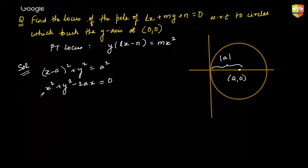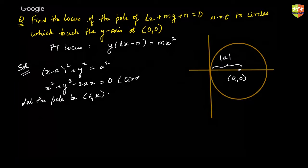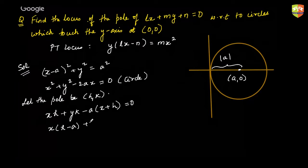Now, to find the locus of the pole, I will call it (h, k). Let the pole be (h, k). So if I write the polar for this circle which touches the y-axis, it will be xh + yk − a(x + h) = 0.